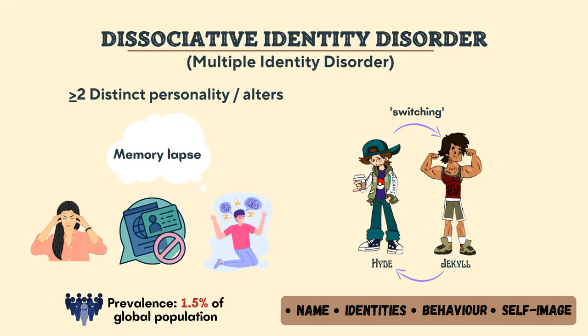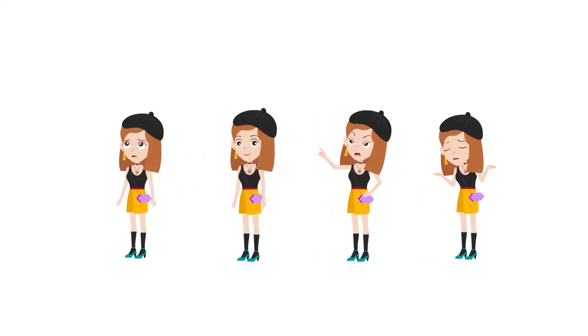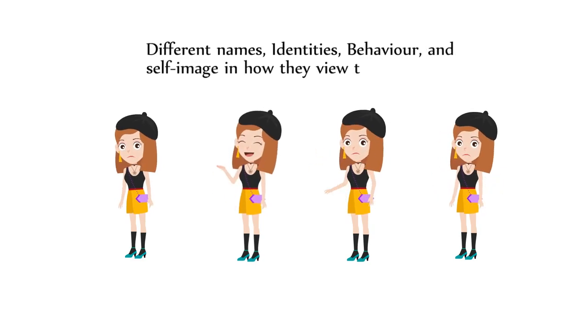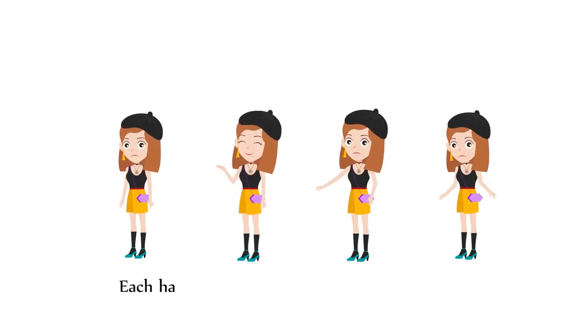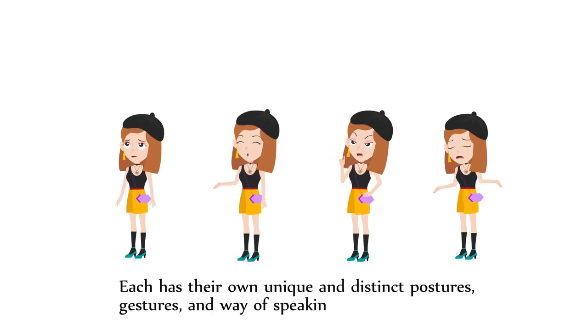Dissociative Identity Disorder, or DID, also known as Multiple Personality Disorder, is a mental health condition characterized by having two or more distinct personalities or alters. These identities control a person's behavior at different times. The distinct personality states usually have different names, identities, behaviors, and self-image. Each has their own unique and distinct postures, gestures, and way of speaking.